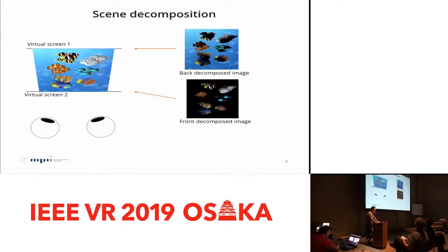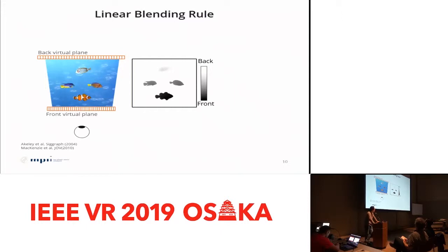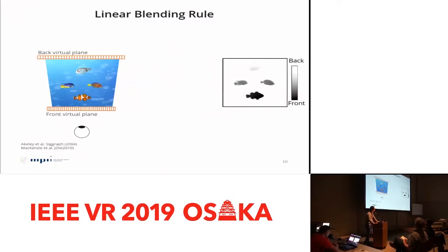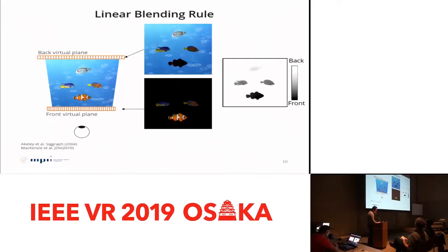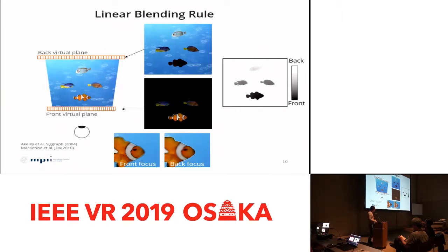There are several algorithms to perform scene decomposition. The simplest is linear blending, which decomposes images based on the depth map. For example, a front object is projected on the front panel, a back object on the back panel, and middle-depth objects are projected on both panels. It can be performed in real time, but it produces strange artifacts around occlusion boundaries and at non-Lambertian surfaces.